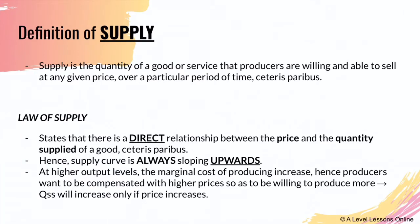Supply is the quantity of a good or service that producers are willing and able to sell at a given price over a particular period of time. In supply, we're looking at producers. Back in demand, we were looking at consumers. Demand is always provided by consumers and supply is always provided by the producers — that is how they interact in the market. There's always a demand, there's always a supply.